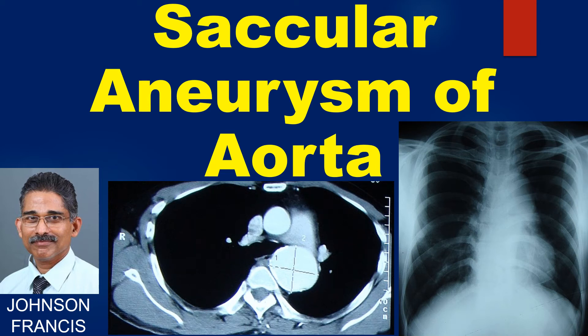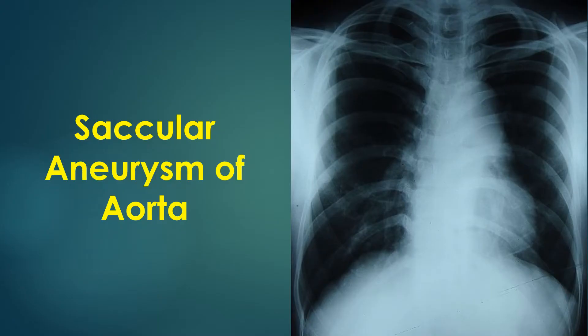Discussion on a circular aneurysm of the proximal descending thoracic aorta demonstrated on chest X-ray and CT scan. The circular aneurysm is visible within the cardiac silhouette, just below the aortic knuckle on the left border, and is partly overlapped by the main pulmonary artery shadow.